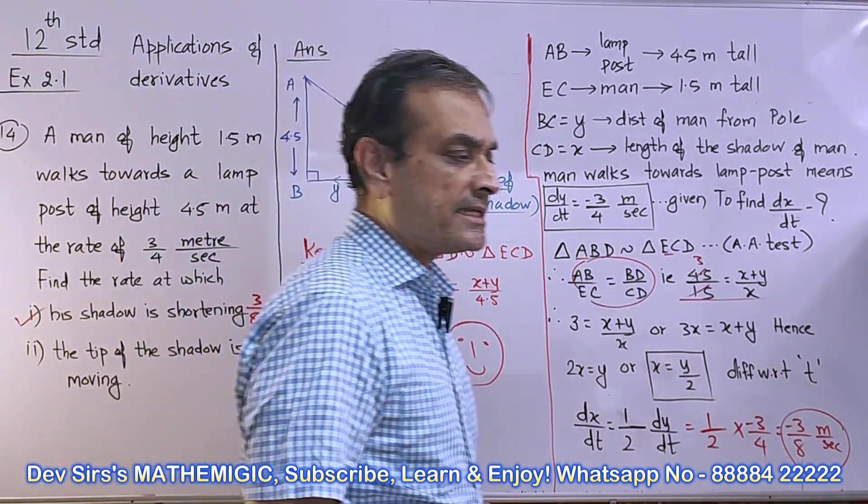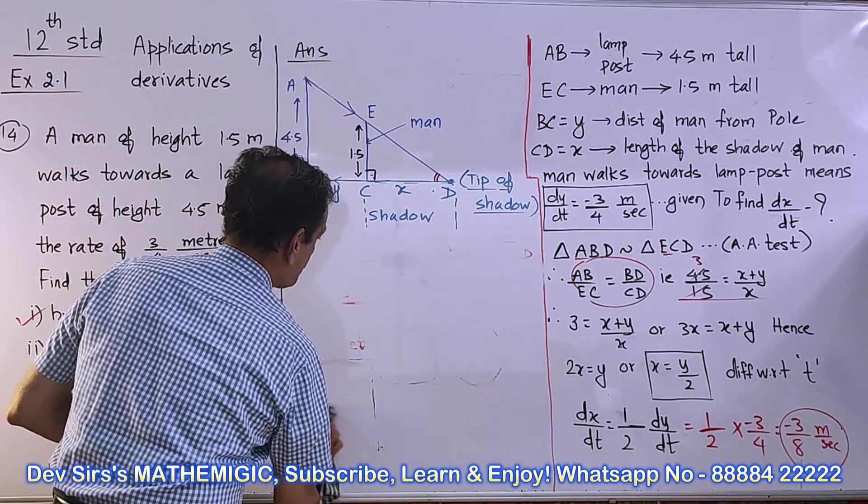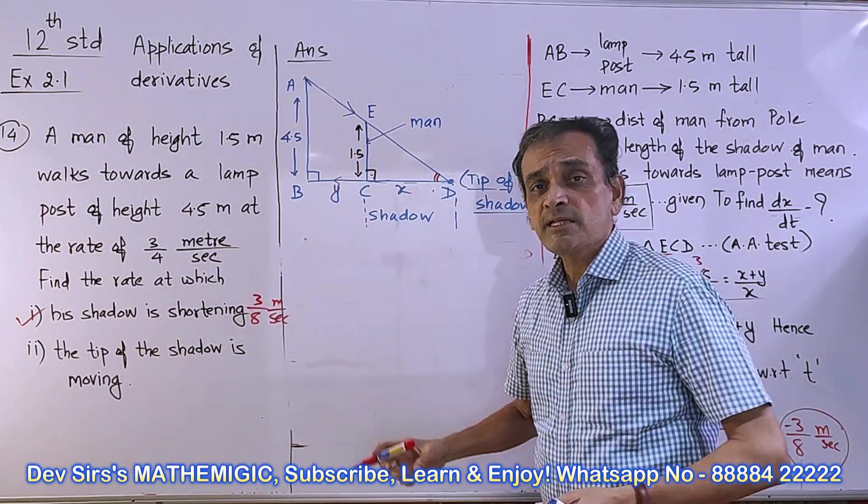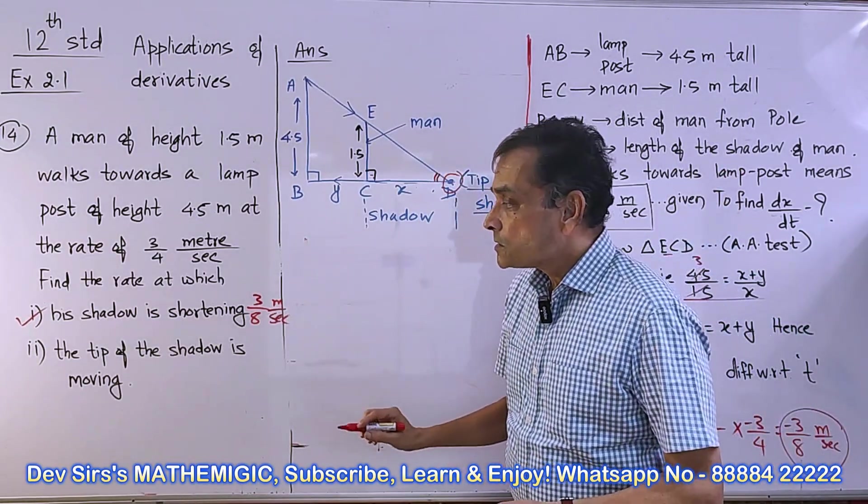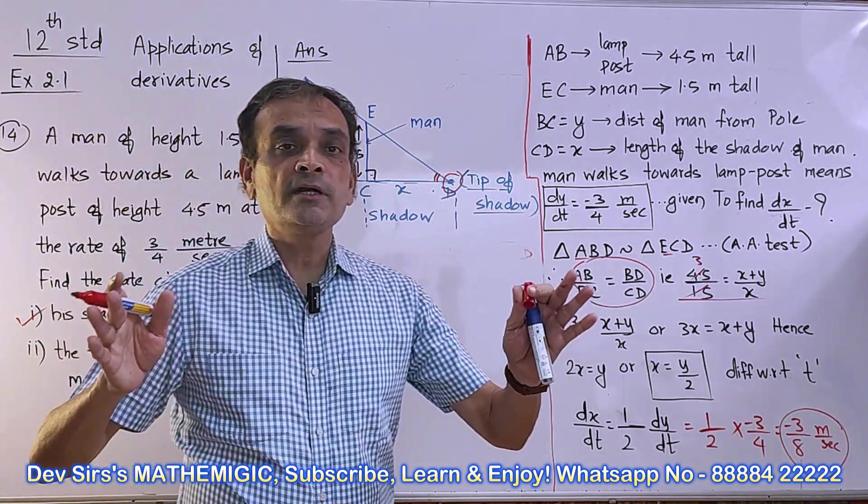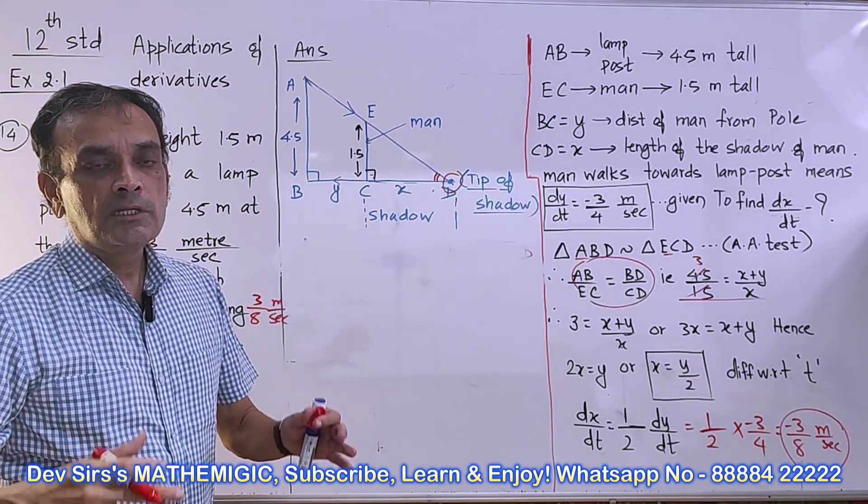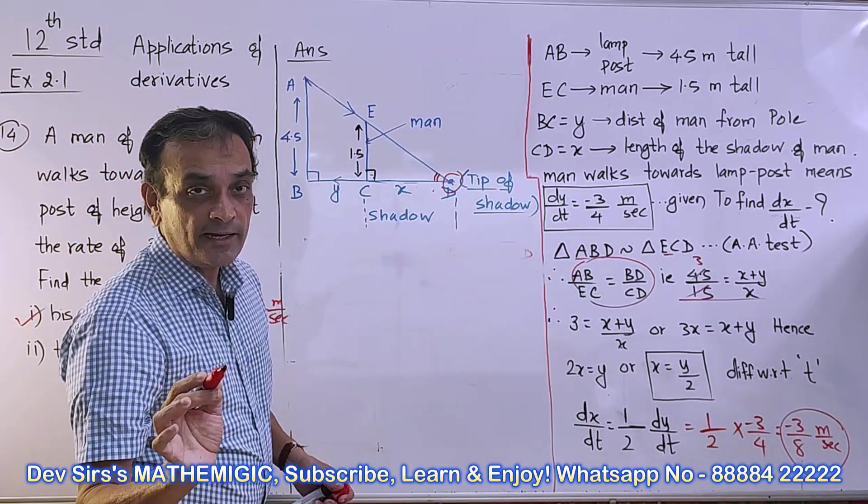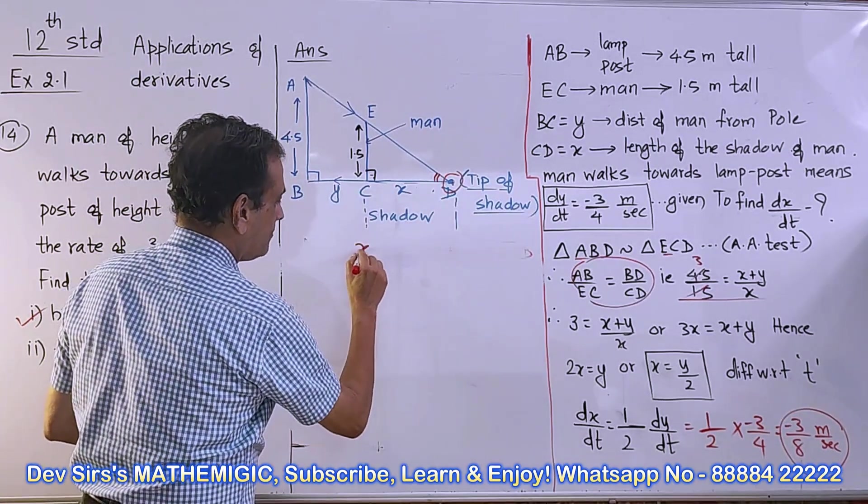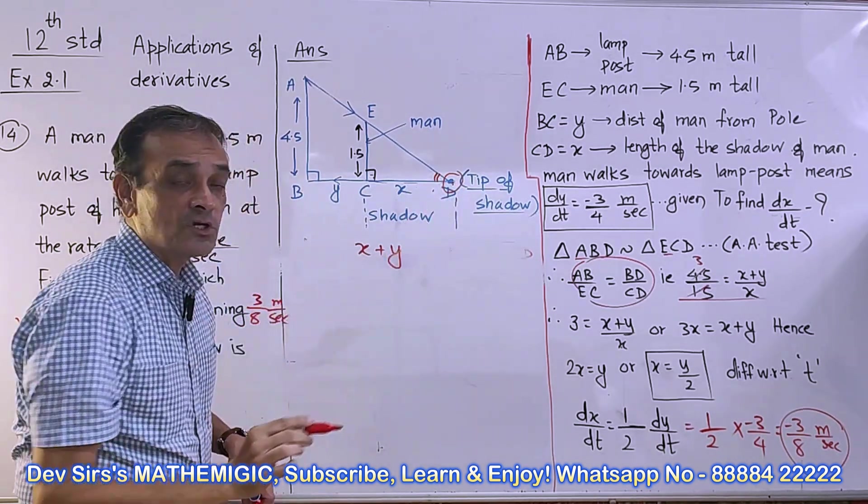Now let's take the second one: the tip of the shadow is moving. X represents the length of the shadow, change of length is dX/dT. Now the difference is, distance of the tip of the shadow from the lamp post is X+Y, this distance BD.